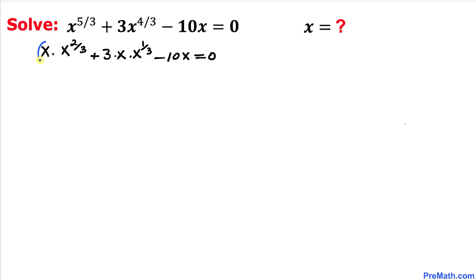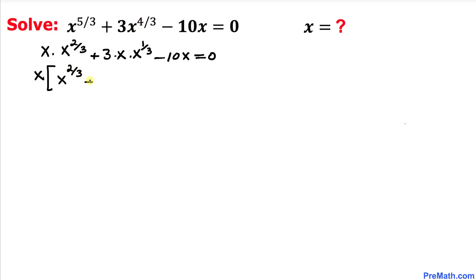Now we can see that x is common in all terms, so we can factor it out. Factoring out x, inside the bracket we get x to the power 2/3 plus 3 times x to the power 1/3 minus 10, equals 0.